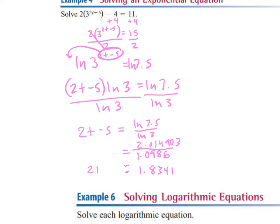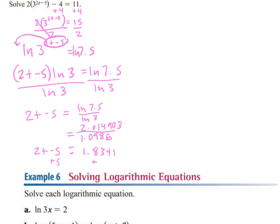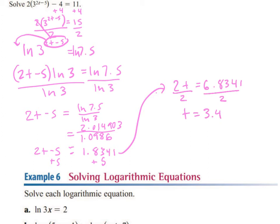This is still equal to 2t minus 5, so we solve for t. We add 5 to both sides, giving us 2t equal to 6.8341. Then we divide both sides by 2, so t is equal to 3.4170. That's our final answer.